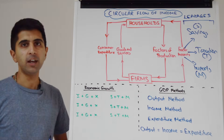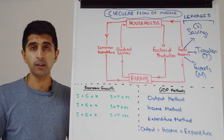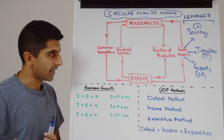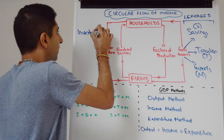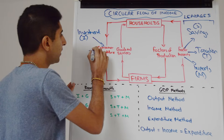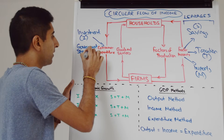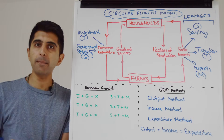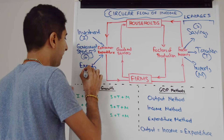At the same time, we've assumed the only expenditure on domestic goods and services is by households — another crazy assumption. Firms could spend; that's known as investment, denoted by the letter I. Government can spend too; government spending is denoted by G. And foreigners can spend — when they buy goods and services made in our economy, that's known as exports for us, denoted by X.